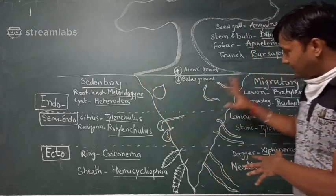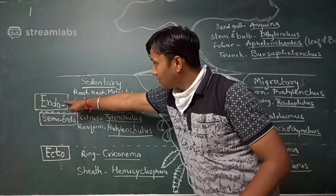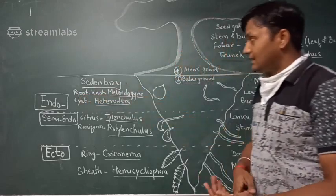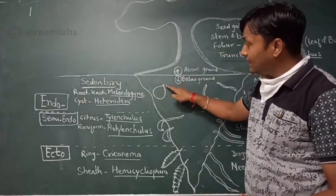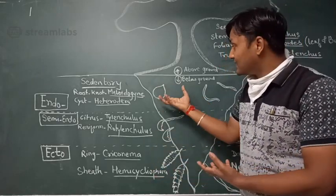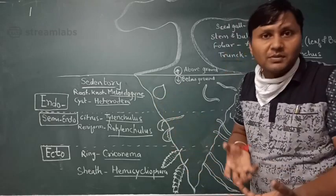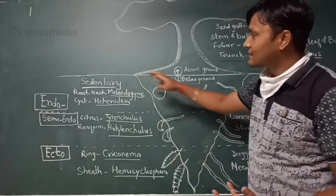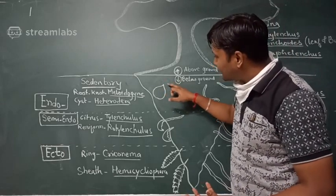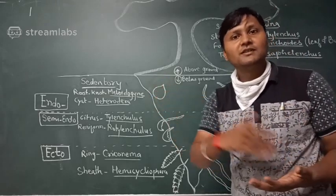Under sedentary endoparasitic nematodes, the best example is the root knot nematode, Meloidogyne. The female remains within the plant system due to sexual dimorphism — she is piriform or melon-shaped and therefore cannot move from one place to another. She creates giant cells or nurse cells, allowing her to feed from one fixed location.